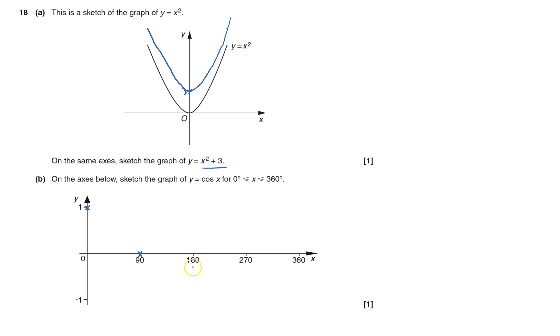If I work out cos of 180, that would give me minus 1. If I put in 270, that would give me 0. If I put in 360, that would give me 0.